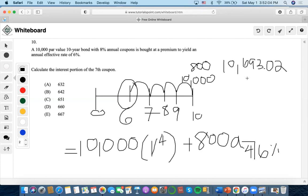So once we're able to find the price of the bond at time 6, a year prior, we're able to find only the interest portion of the 7th coupon by multiplying this value by the effective rate of 0.06 by 1 year and what we are able to get is